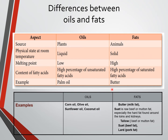Examples of fats include butter from milk fat; suet, which is raw beef or mutton fat — especially the hard fat found around the loins and kidneys; tallow from beef or mutton fat; and lard, which is pork fat.